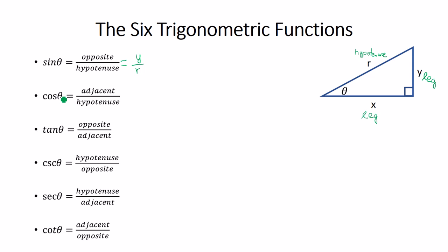Cosine of theta. Think about the word 'co,' like co-workers. You want the side that's adjacent — that's closest to the angle — the leg X, and you want to put it over the hypotenuse R. So cosine is adjacent over hypotenuse, which is X over R.